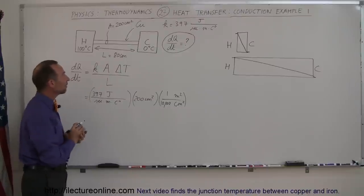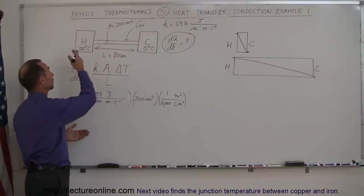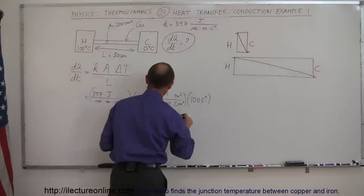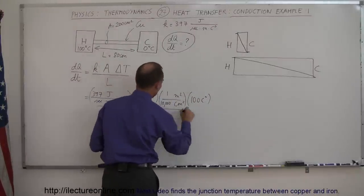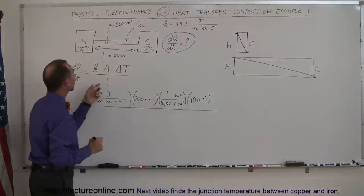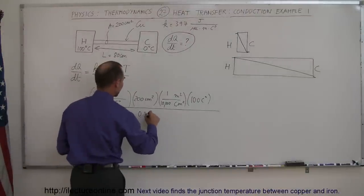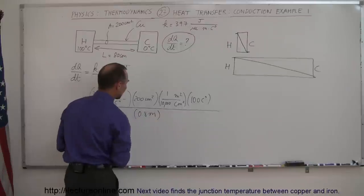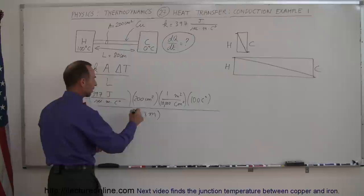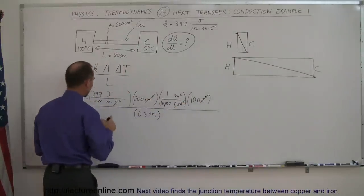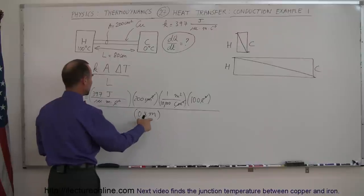The next is the difference in the temperature, well the difference between 100 and zero is 100, so that's times 100 centigrade degrees, and we divide the whole thing by the length of the path. 80 centimeters is 0.8 meters. Okay, now let's see if we can cancel some things out. So square centimeters, we get rid of that. Centigrade degrees, that cancels out. Per meter and meters.